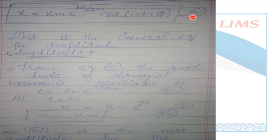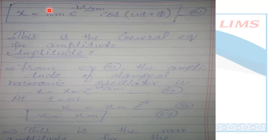If I want to find the amplitude at time t=0 or time t=infinity, I will use this equation. The amplitude factor is x = xm · e^(−bt/2m). At time t=0, this represents the initial point — like a simple pendulum set to the extreme position where oscillations start.